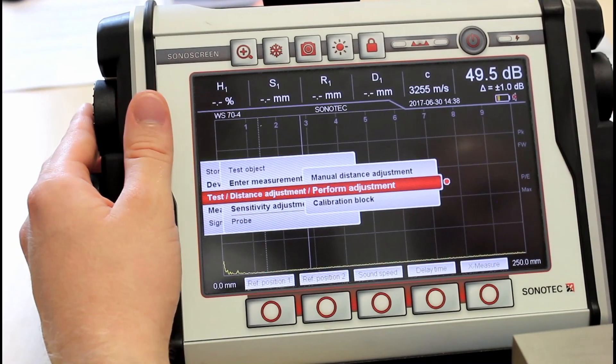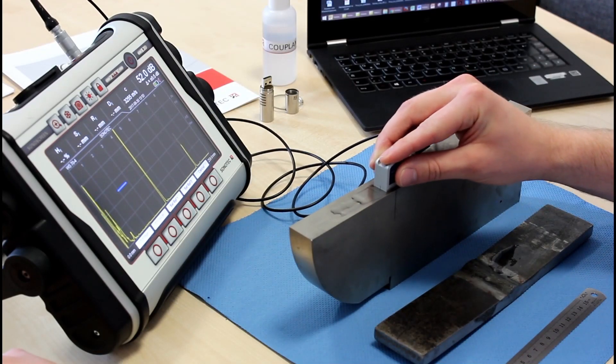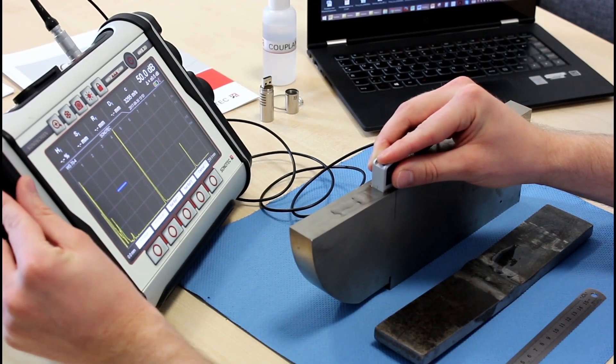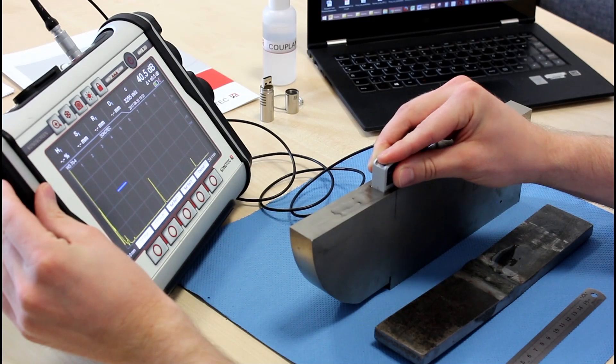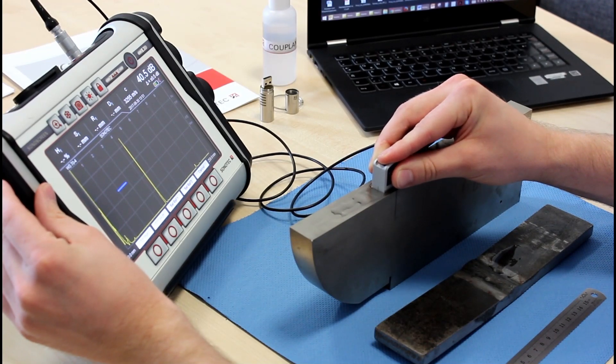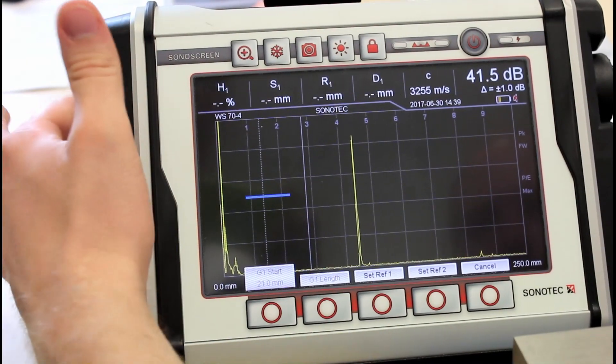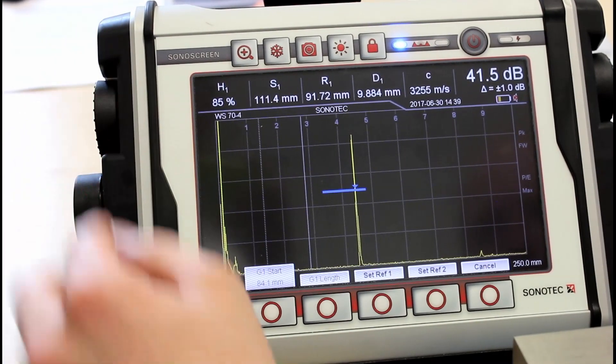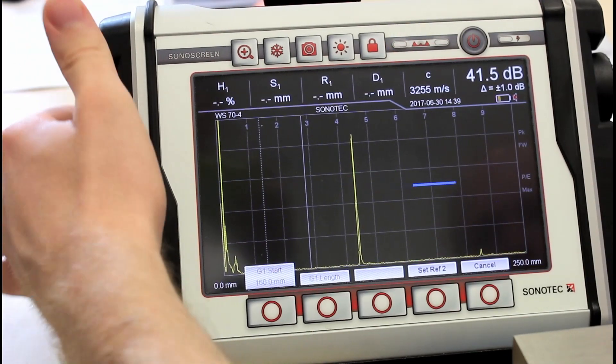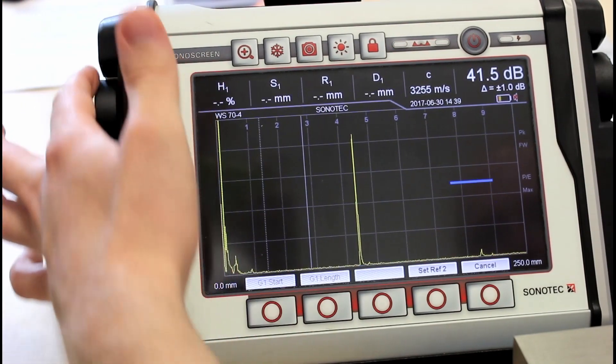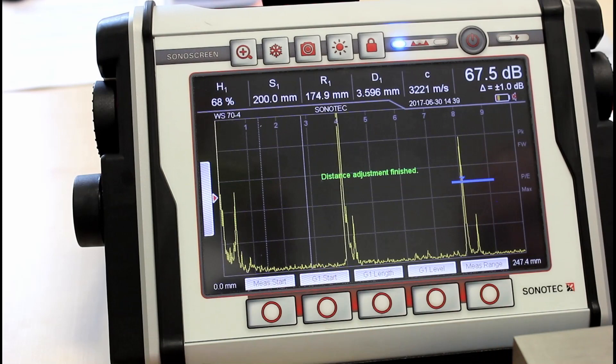When you have done that, you simply go to perform adjustments, putting the probe on the block. And we are maximizing our echoes. Should be right here. And then you put the gate in the first echo. Set reference one. Put the gate on the second echo. Increase the gain a bit. Set reference two. And press done.